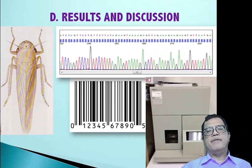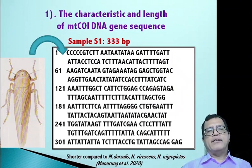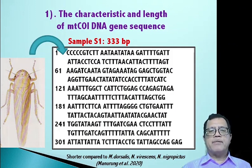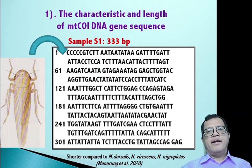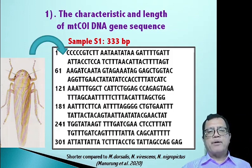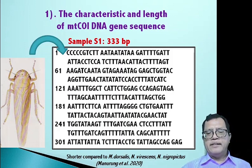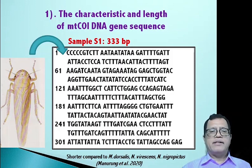Regarding the results: the first finding concerns the characteristics and length of the MTC01 DNA gene of white leafhopper from Samosir Island. The result shows the length of the MTC01 DNA of the white leafhopper from Samosir Island was 333 base pairs. When comparing this length to other leafhoppers also from Samosir Island, such as Maestas dorsalis, Nephotettix pyresen, and Nephotettix necropictus, the MTC01 DNA gene length of this white leafhopper is still shorter.